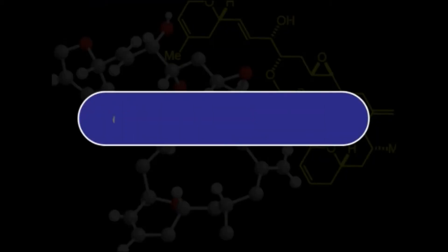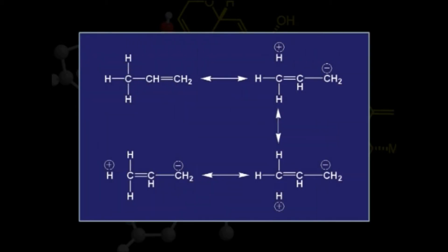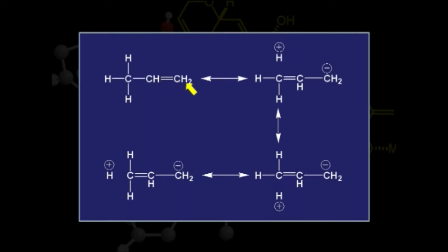We can understand the concept of hyperconjugation with the help of propene. Here we can see that three carbon-hydrogen sigma bonds are present at the alpha carbon with respect to the carbon-carbon pi bond.